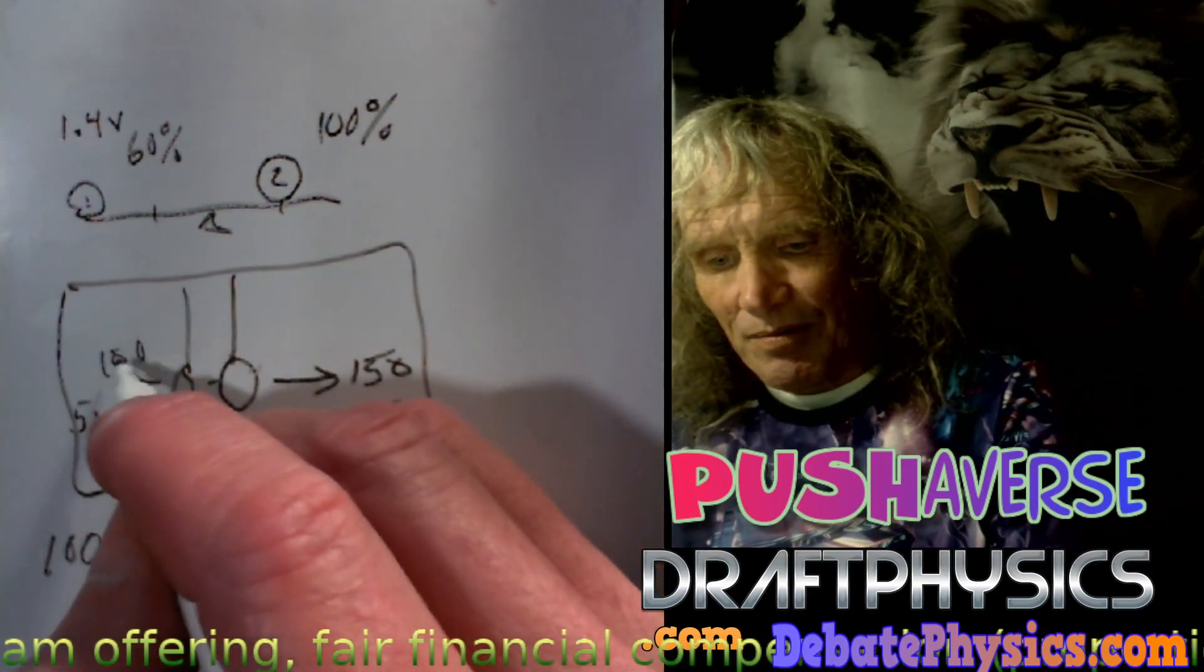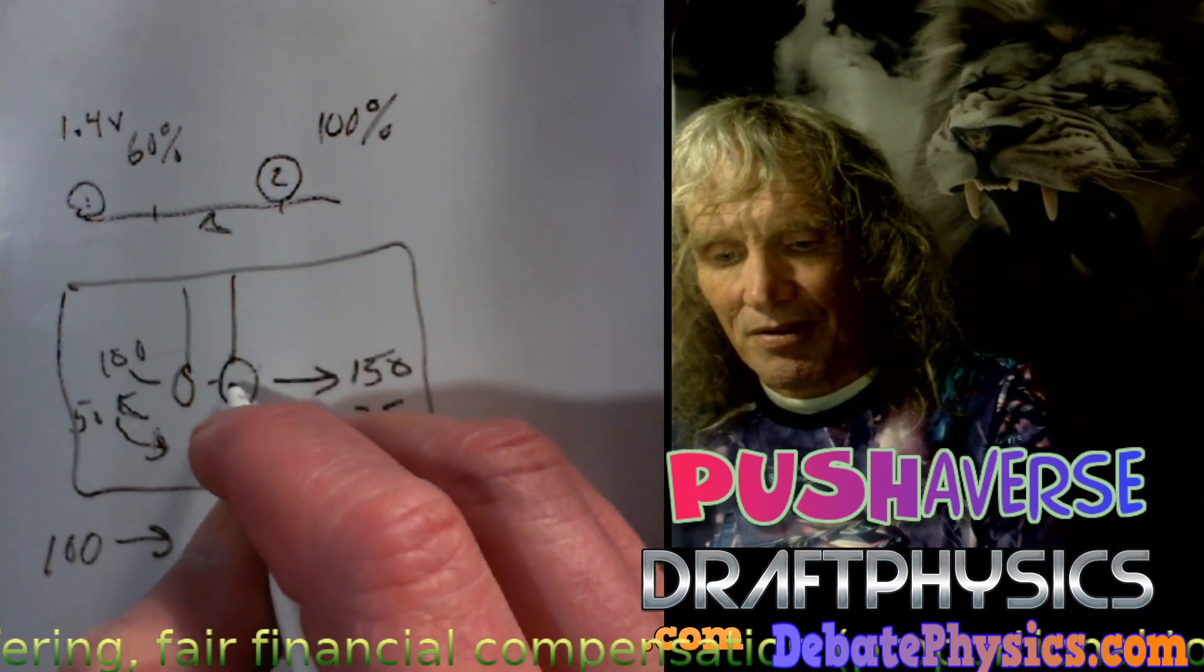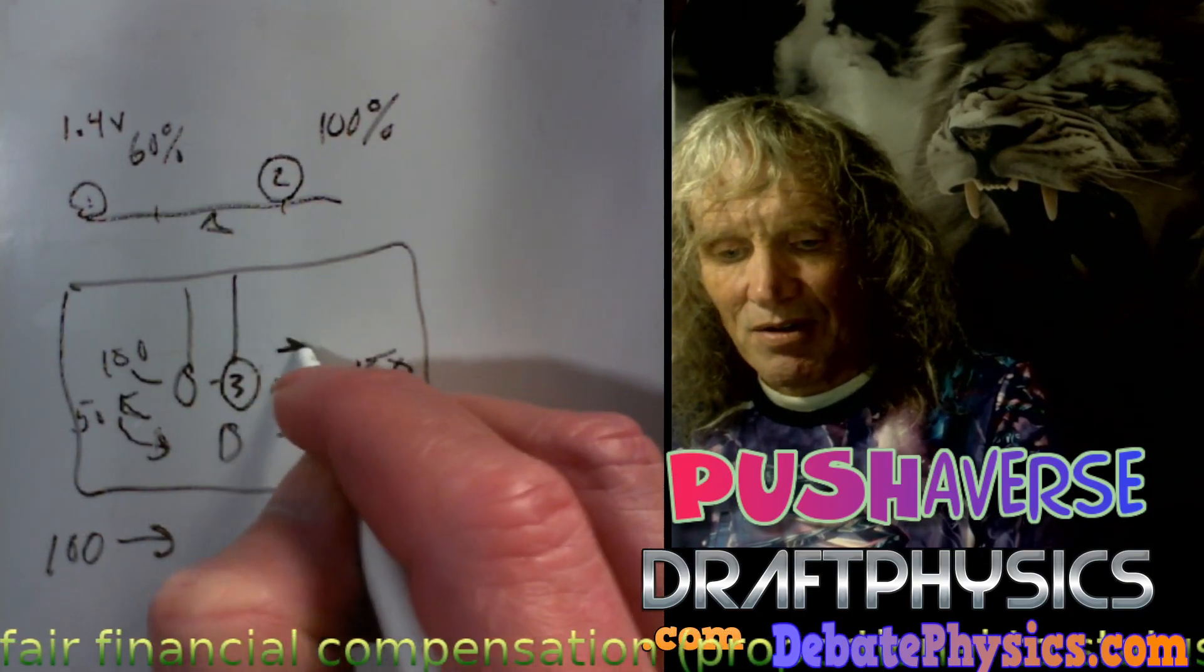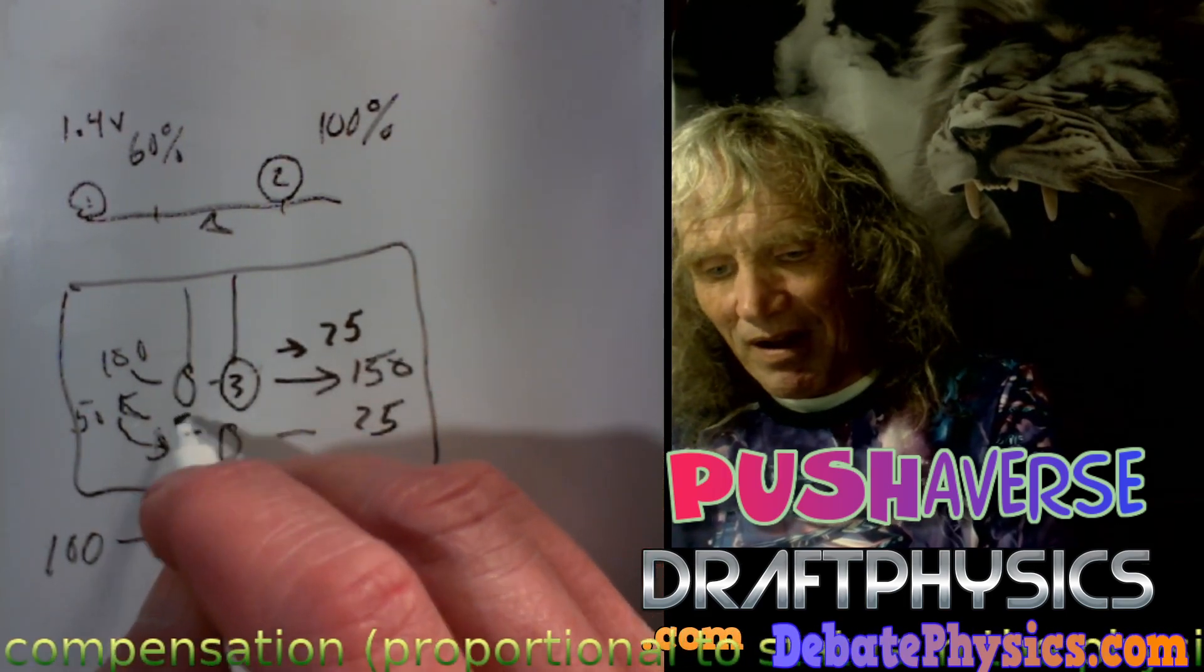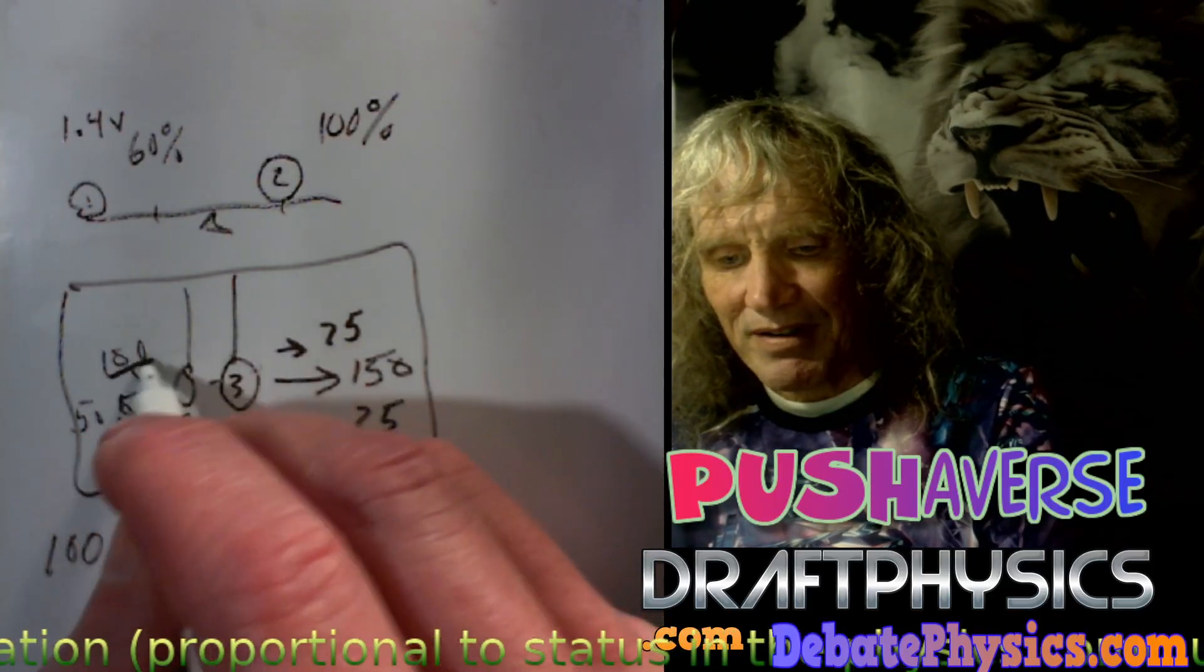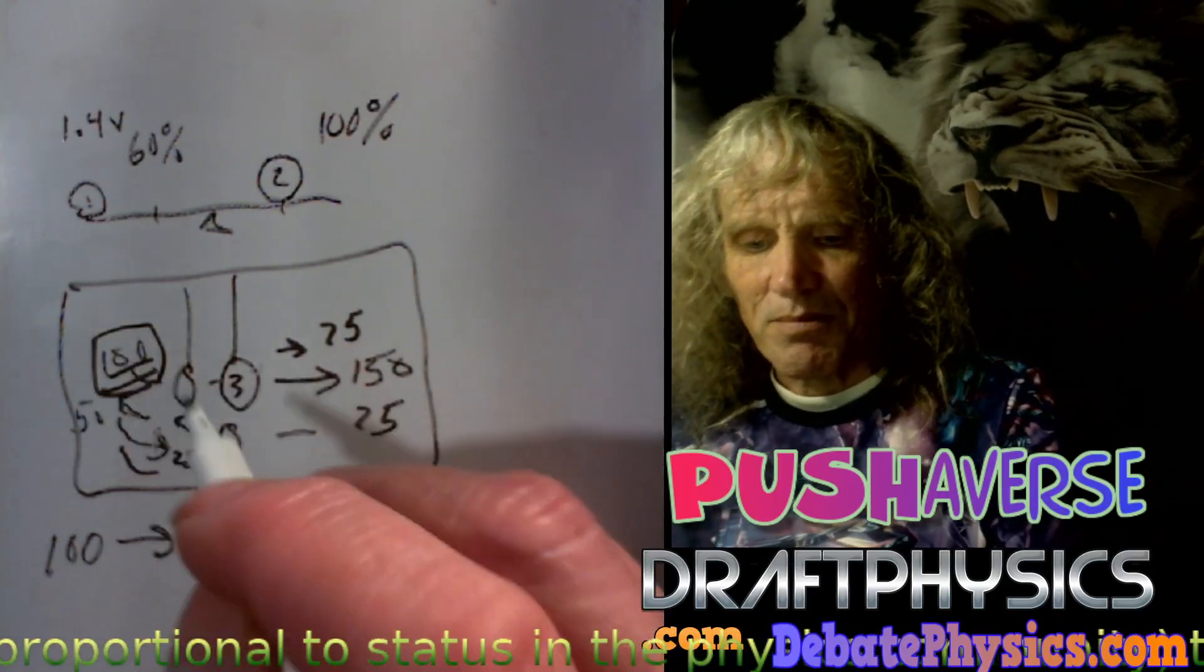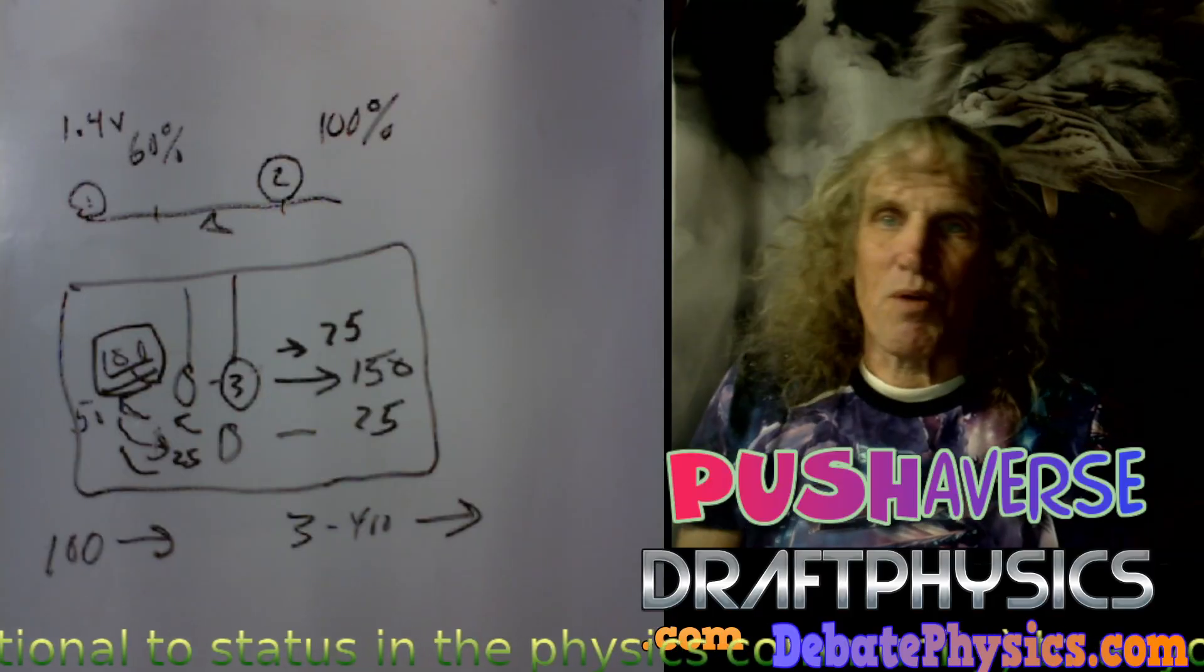Because what really happens is when the 100 hits the three mass, this goes away with 75 momentums and the reply is 25, and that's where your 100 is preserved. So they're moving one quarter of the velocity, not one half the velocity.